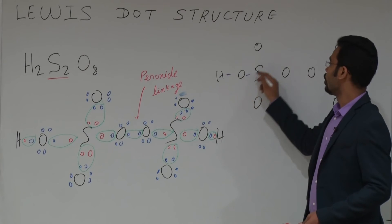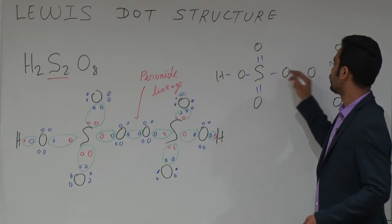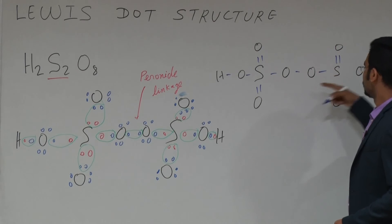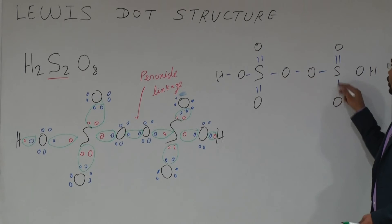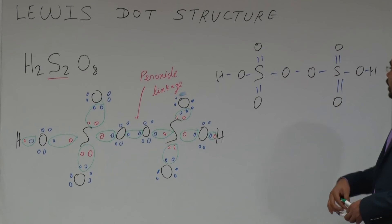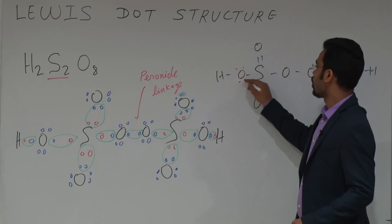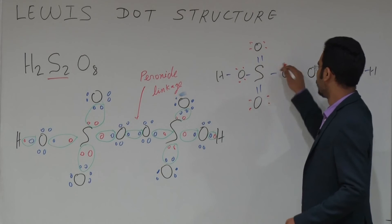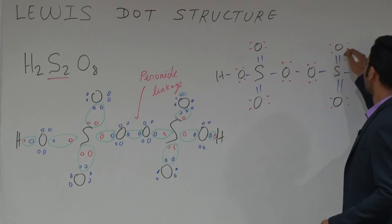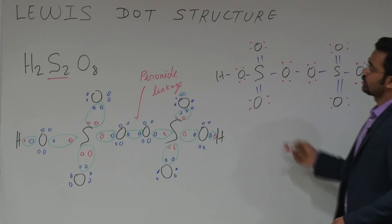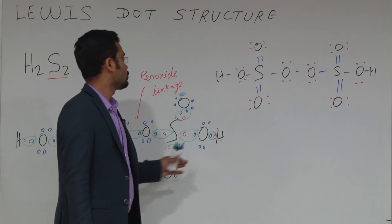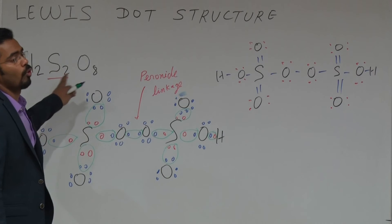One bond here, two bonds here. Oxygen can form a maximum of 2 bonds generally, so it has one bond to oxygen and one bond to sulphur — making two bonds total. Now draw the lone pairs: all oxygen atoms have 2 lone pairs. This is the complete structure of H2S2O8.